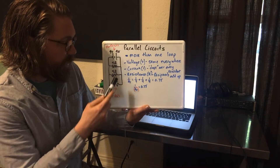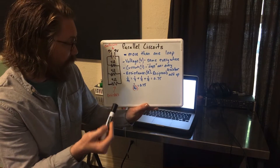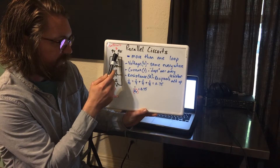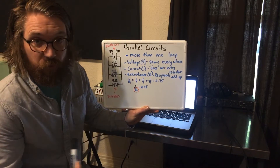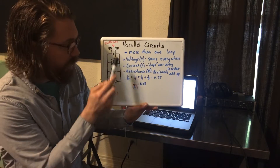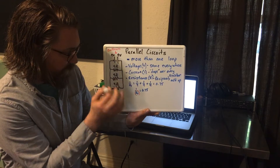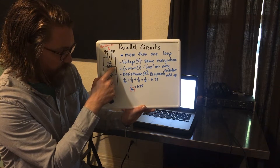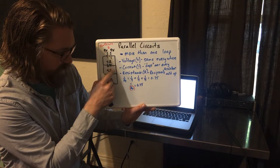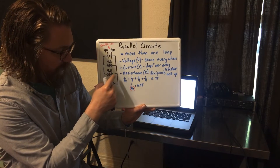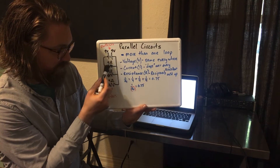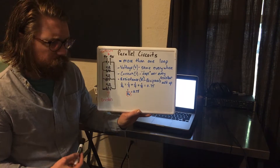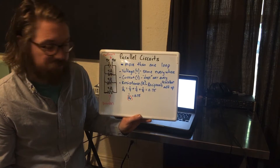If you look at the first example on the PowerPoint, we have two nine-volt batteries and three four-ohm resistors. When the wire comes out of the battery, it splits before it gets to each resistor. One wire goes through one resistor, the other wire goes to the next resistor. Each of these splits means every resistor or light bulb is in its own individual loop.